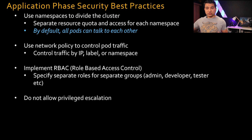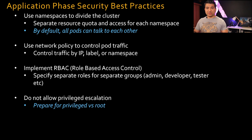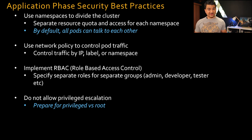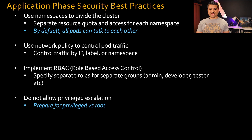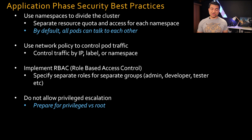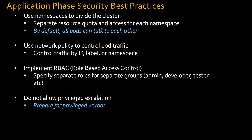The next best practice is to not allow privileged escalation. Prepare for interview questions on the difference between privileged access and root access. With root access, you are still confined to your current container — you cannot impact other namespaces or containers. But privileged access allows you to access other containers and namespaces, which is a strict no-no. In your pod manifest file, always set allowPrivilegeEscalation to false.